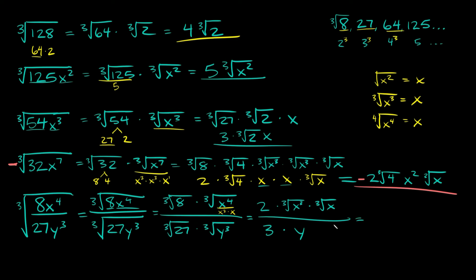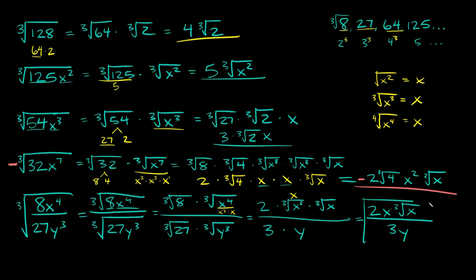Simplifying: on top, the cube root of x cubed equals x, then cube root of x stays as cube root of x, and we have our 2. So on top we have 2 times x times the cube root of x, all over 3 times y — which is 3y. That's as simplified as we can get that, so this would be your final answer.